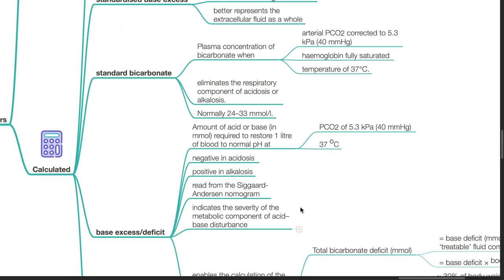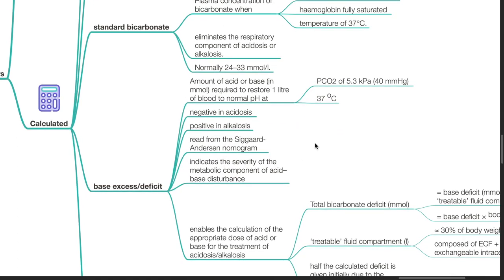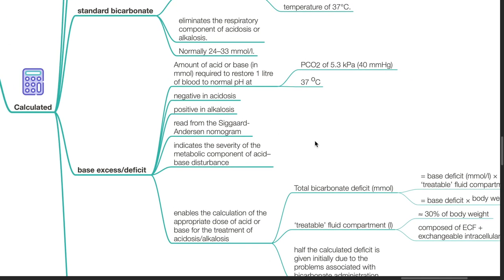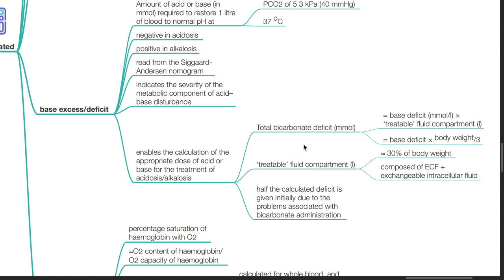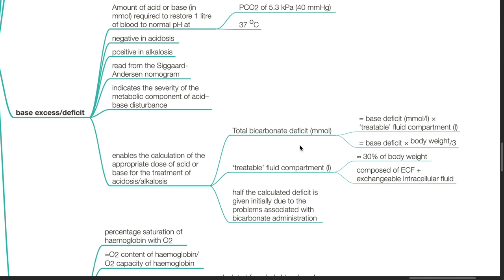Base excess or base deficit is the amount of acid or base in mmol required to restore 1 litre of blood to normal pH at a pCO2 of 40 mmHg and 37 degrees Celsius. It is negative in acidosis and positive in alkalosis, and is read from the Siggaard-Andersen nomogram. It indicates the severity of the metabolic component of acid-base disturbance and enables the calculation of the appropriate dose of acid or base. Total bicarbonate deficit in mmol equals base deficit in mmol per litre times the treatable fluid compartment, where treatable fluid compartment in litres equals 30% of body weight.